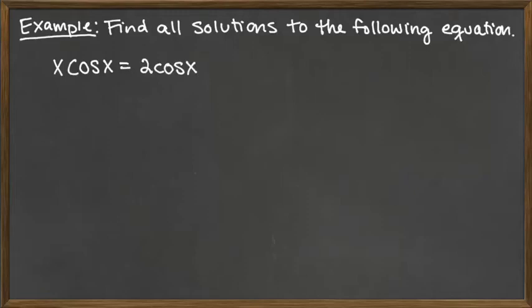In this example, we'll find all solutions to the equation x times cosine of x is equal to 2 times cosine of x.